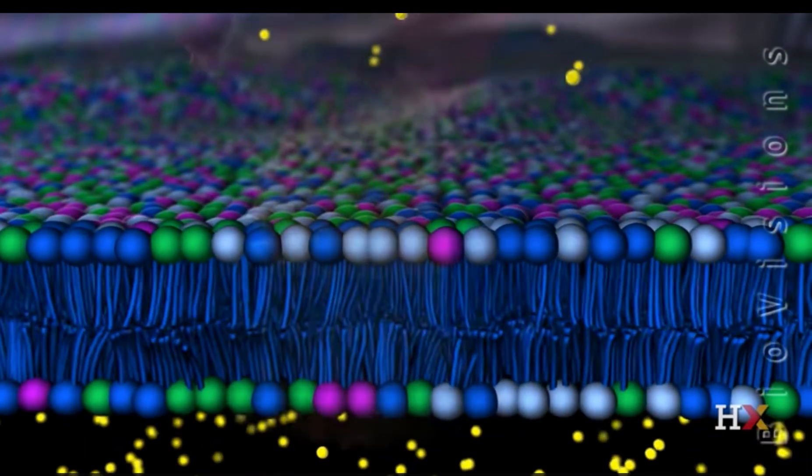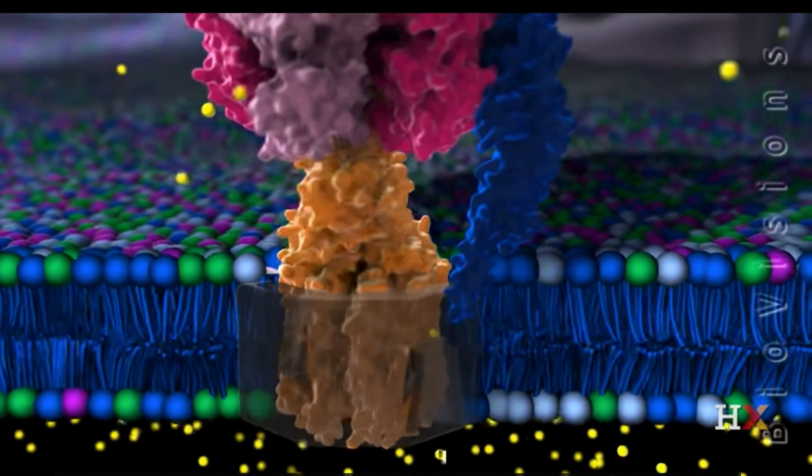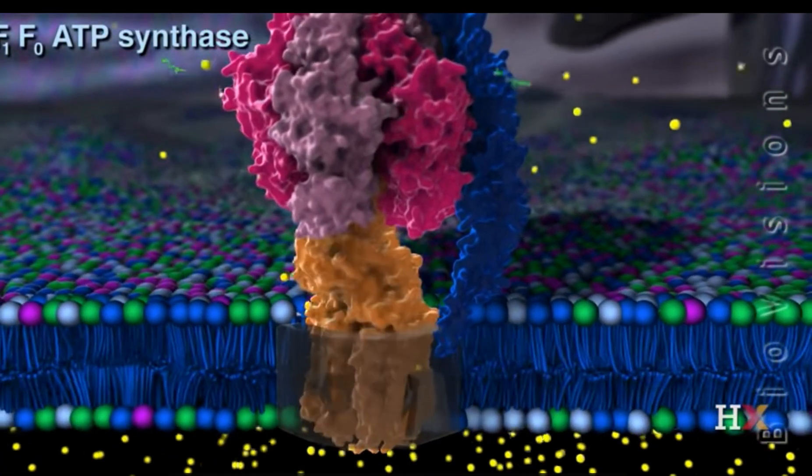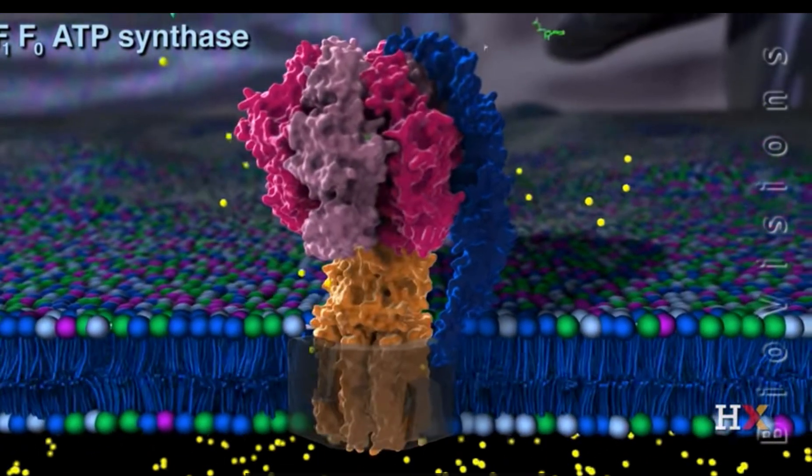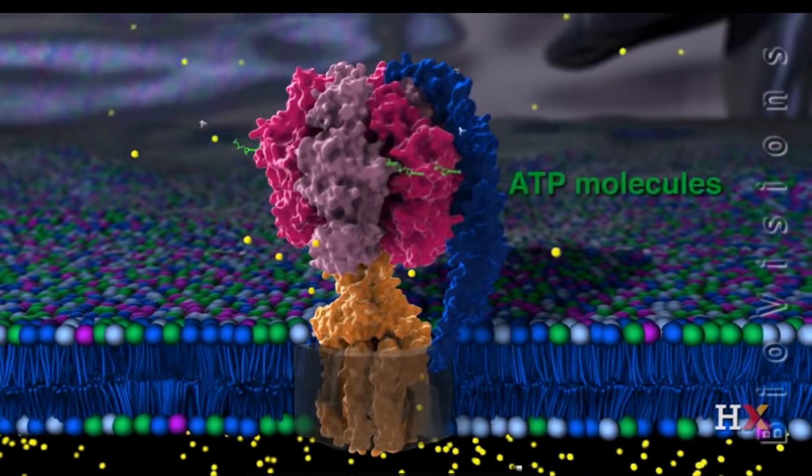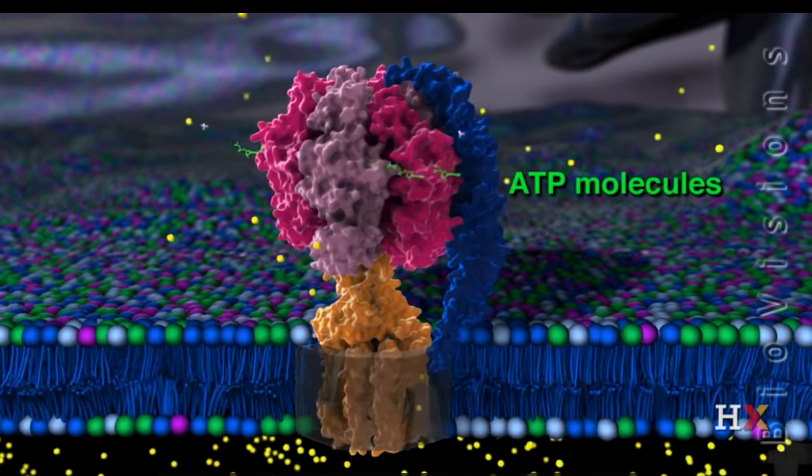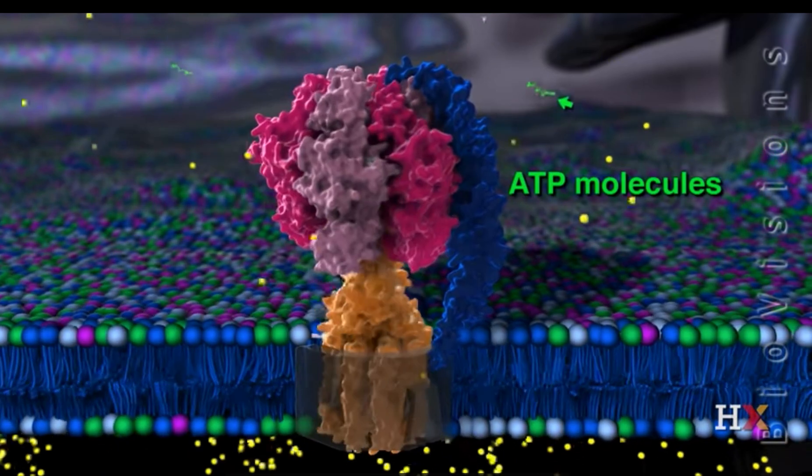The membrane also contains a large protein complex called F1-F0 ATP synthase, which uses the proton gradient to drive the synthesis of ATP molecules. These ATP molecules ultimately provide the energy for most of the cell's reactions.